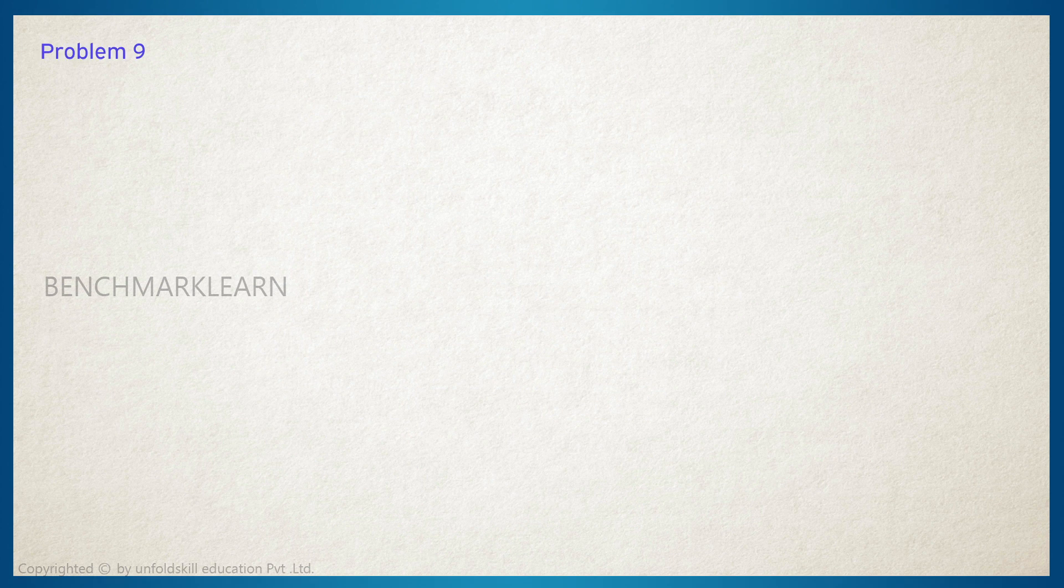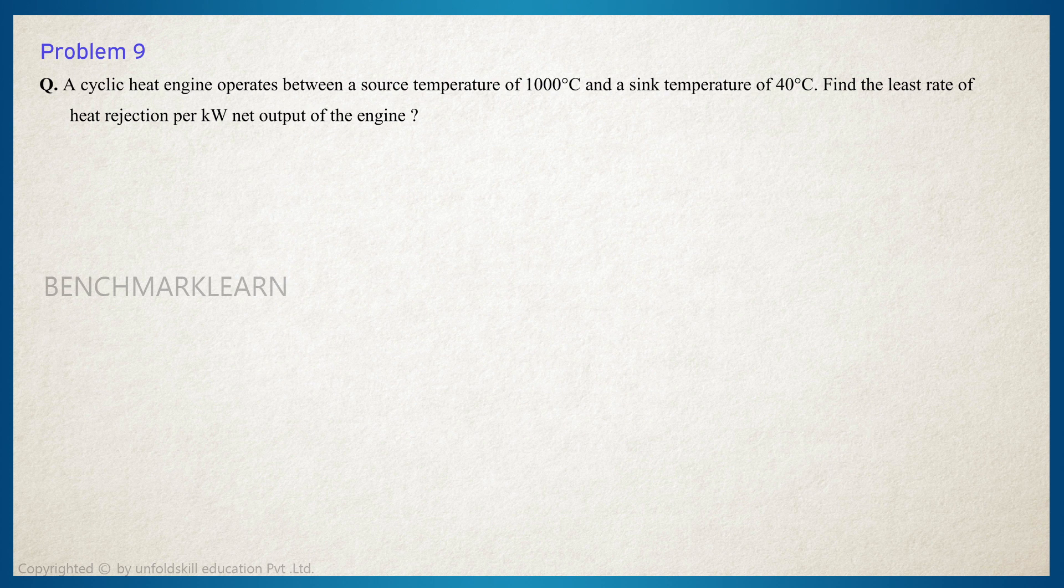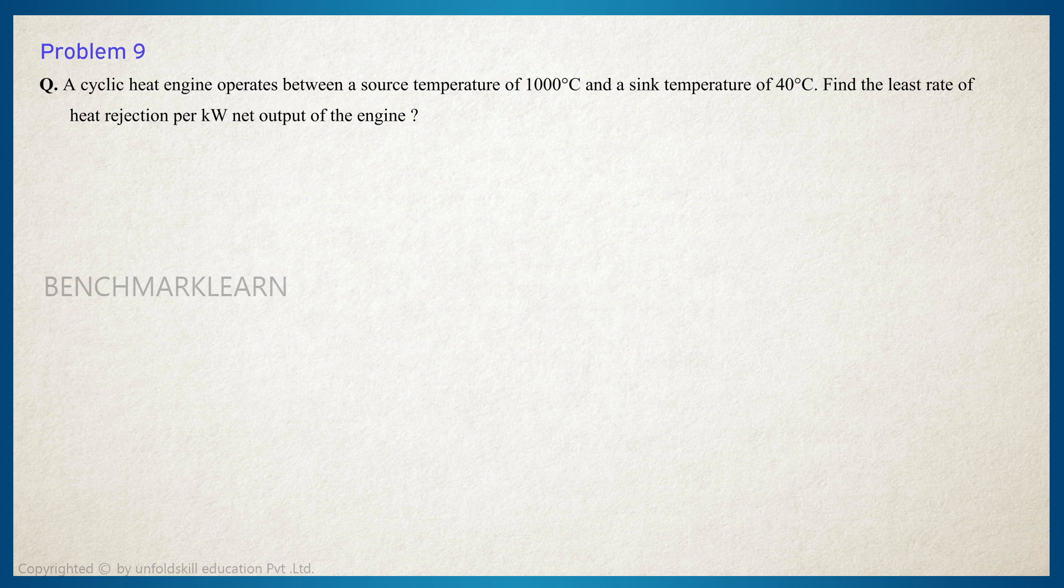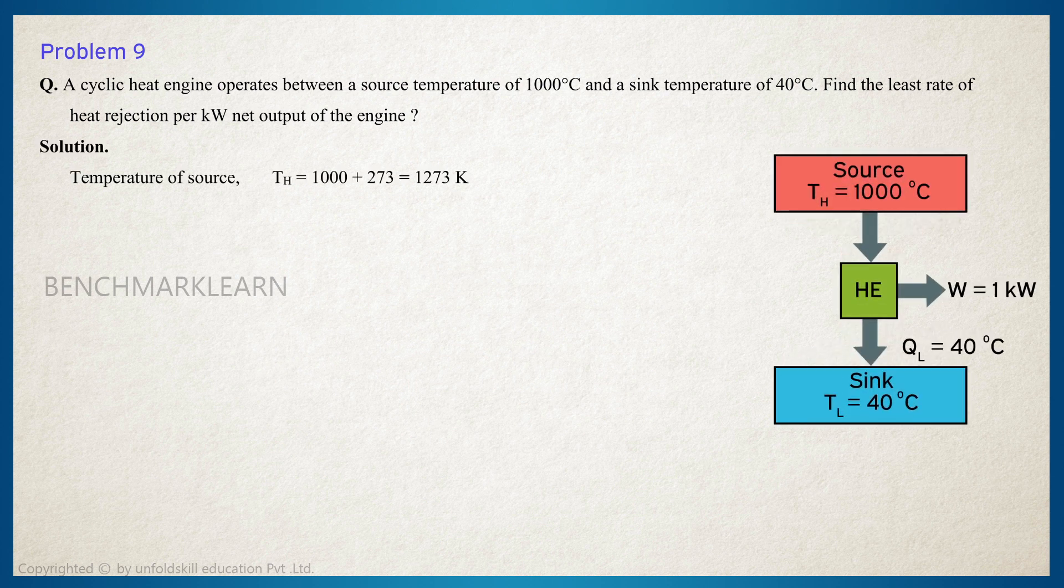Problem number nine: A cyclic heat engine operates between a source temperature of 1000 degrees Celsius and a sink temperature of 40 degrees Celsius. Find the least rate of heat rejection per kilowatt net output of the engine.